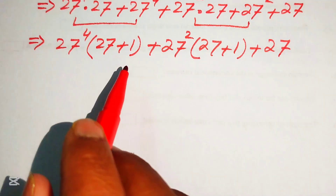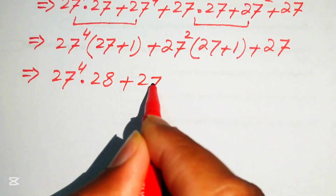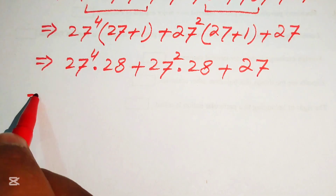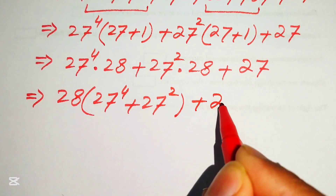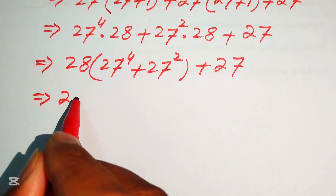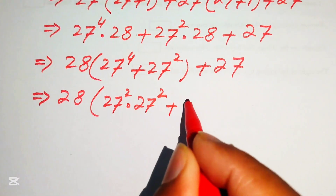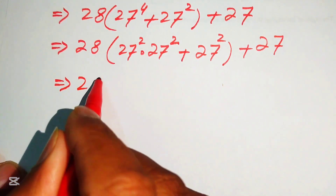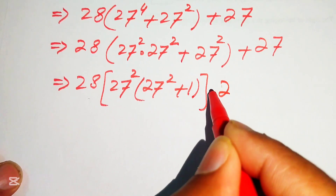Since 27 plus 1 equals 28, we write it as 27 to the power of 4 times 28, plus 27 squared times 28, plus 27. Now we take common 28 from the first two terms and get 28 times (27 to the power of 4 plus 27 squared) plus 27. We then break 27 to the power of 4 as 27 squared times 27 squared, giving 28 times 27 squared times (27 squared plus 1) plus 27.